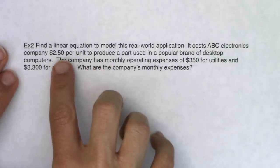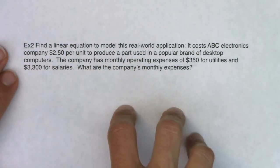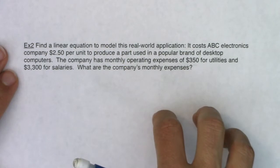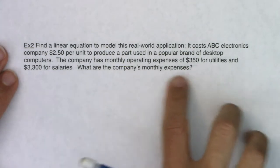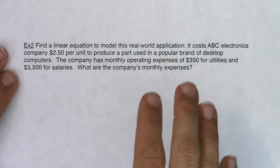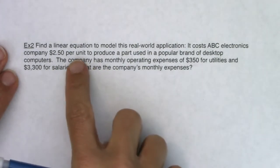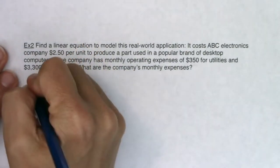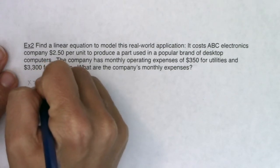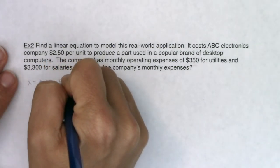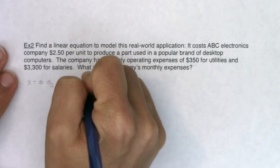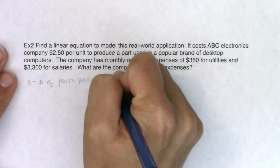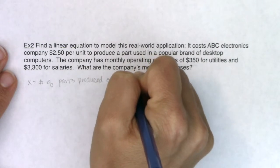If they only produce one part, it's an extra $2.50 a month. If they produce a thousand parts, it'd be another $2,500 a month. And this is just their expenses — this isn't talking about how much money they'll take in if they can sell these parts. So my variable here is the number of parts produced each month, because these are monthly expenses.